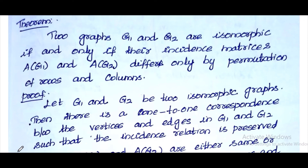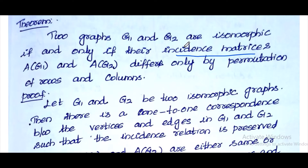We will examine the incidence matrix and its observations. The incidence matrix is one of the key tools. Two graphs G1 and G2 are isomorphic if and only if their incidence matrices differ only by permutations of rows and columns.